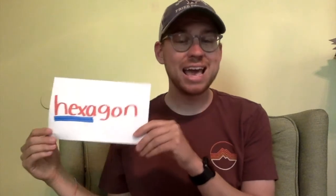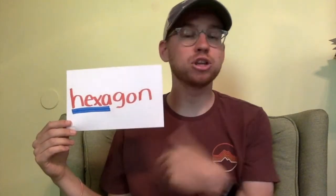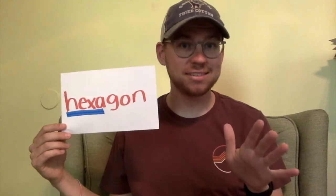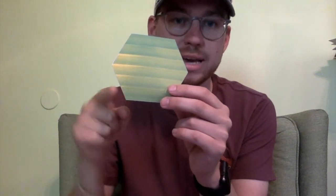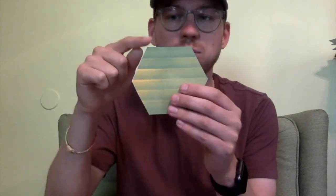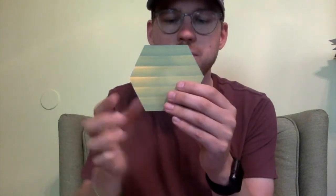The next polygon is a hexagon. I have the prefix 'hexa' underlined, and hexa means six. So a hexagon is a polygon with six sides. Counting together on this example: one, two, three, four, five, six sides and one, two, three, four, five, six angles. A hexagon is a polygon with six sides and six angles.